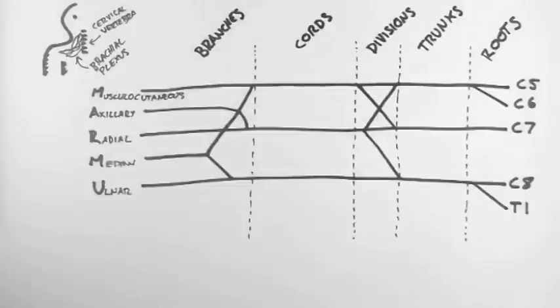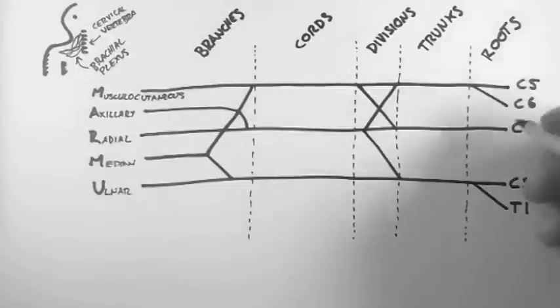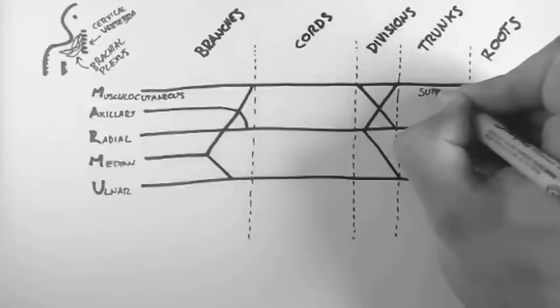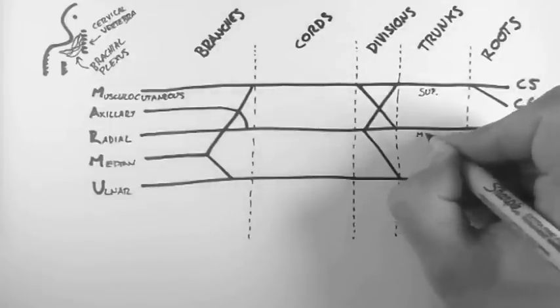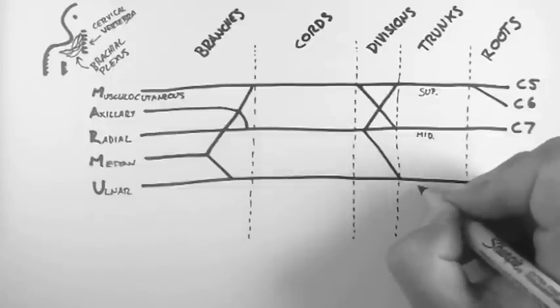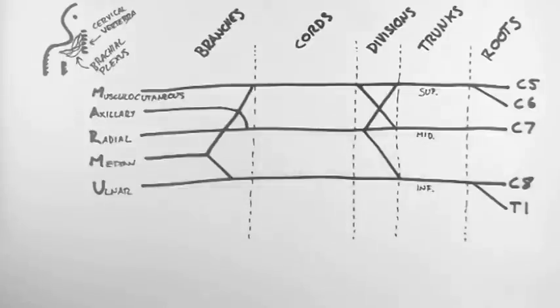So let's look at the trunks. We'll start by labelling those. The top one is the superior trunk, then the middle trunk and then the inferior trunk. So that's pretty intuitive.